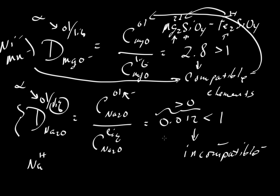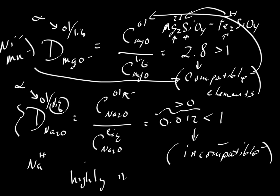So this is a way to introduce the terminology of compatible and incompatible elements. If things are really incompatible, we talk about elements that are highly incompatible — meaning the D value is much, much less than 1.